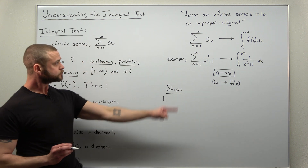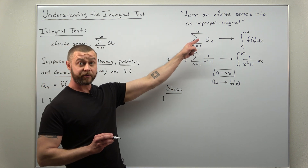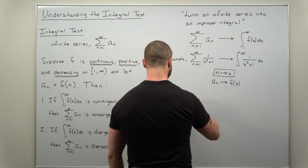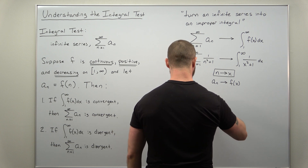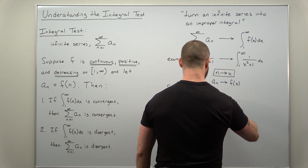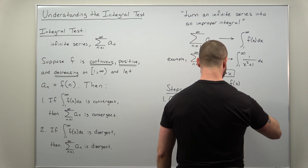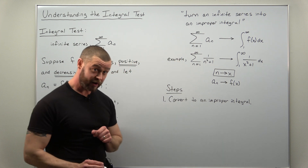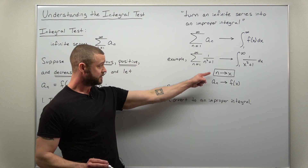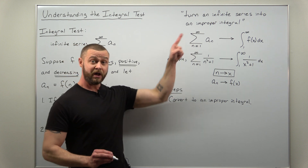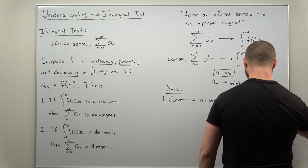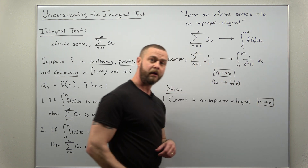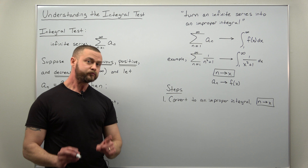Let's write out the steps so you can clearly apply the integral test. Step one: convert from the infinite series to an improper integral. The simple explanation for how to do that is to replace the n's in the infinite series with x.